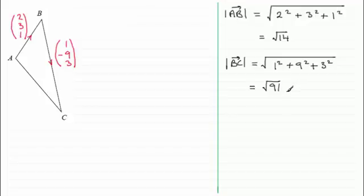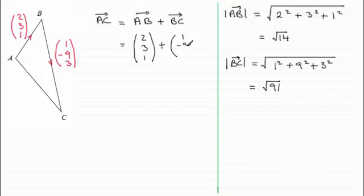Now we need to get the magnitude of AC. First of all, we need to get the vector AC. I can get the vector AC very easily just by combining, by vector addition, the vector AB added to the vector BC. So if we do that, I'm going to write them out as column vectors: (2, 3, 1) plus the vector (1, -9, 3). Doing that gives us the vector: 2 + 1, that's 3; we just add the components: 3 + (-9) is -6; and 1 + 3 is 4. So we've got that vector AC.